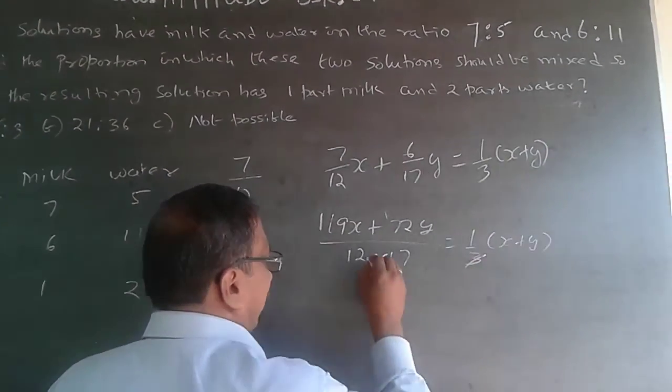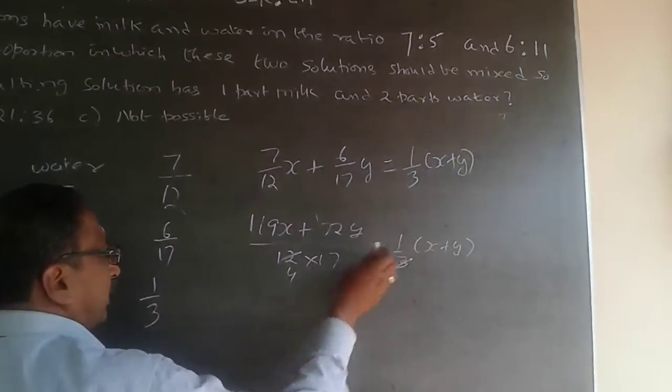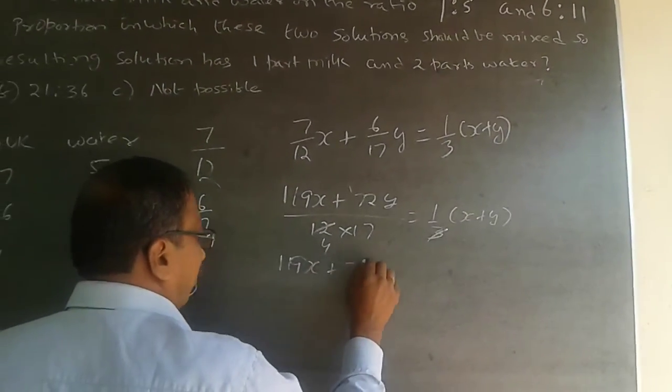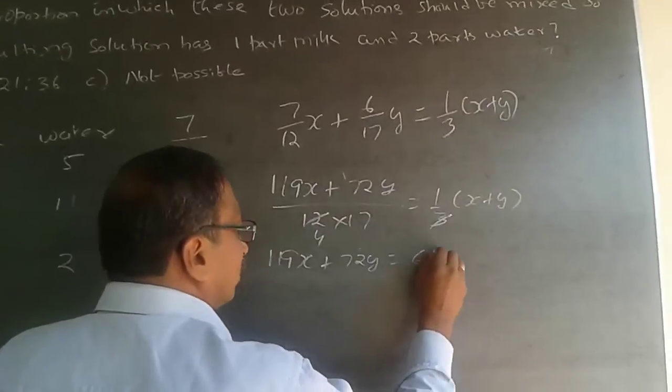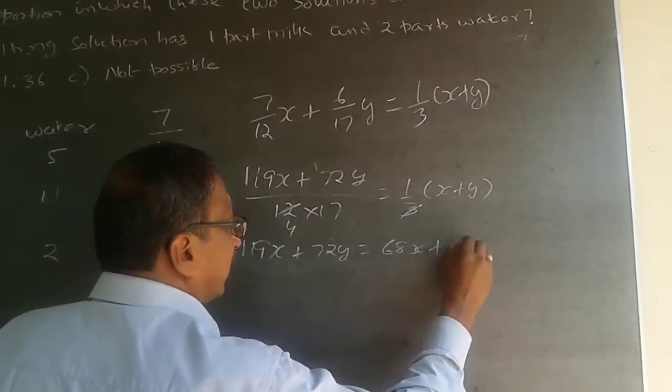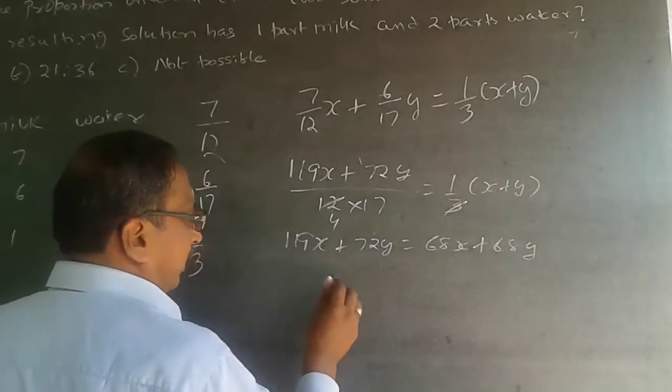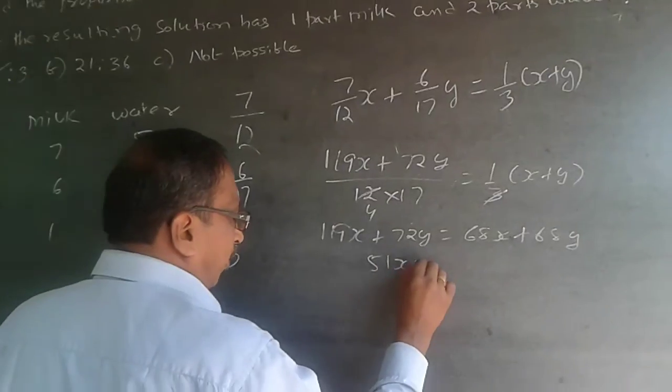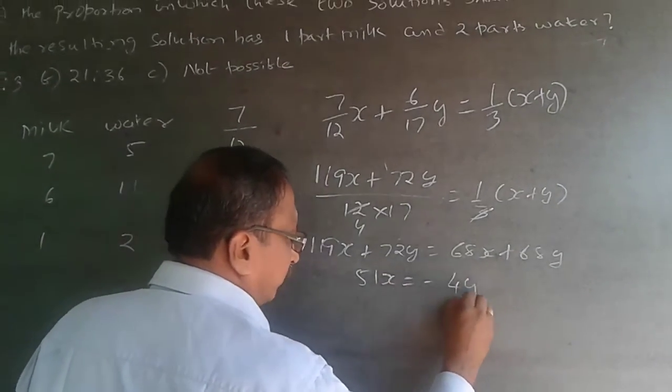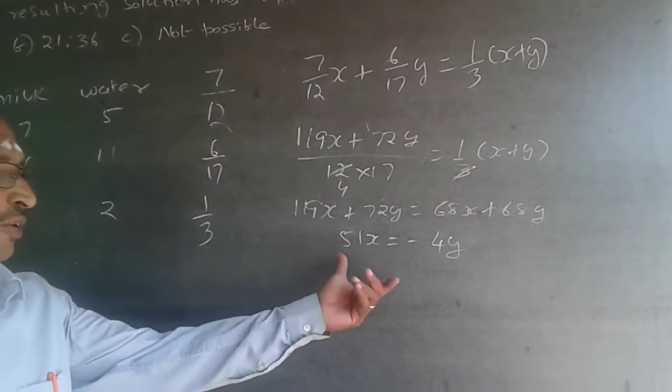Now this 3 will get cancelled, this will be 4, bring the other side. 119x plus 72y will be equal to 68x plus 68y. Now bring it here. 51x will be equal to minus 4y.